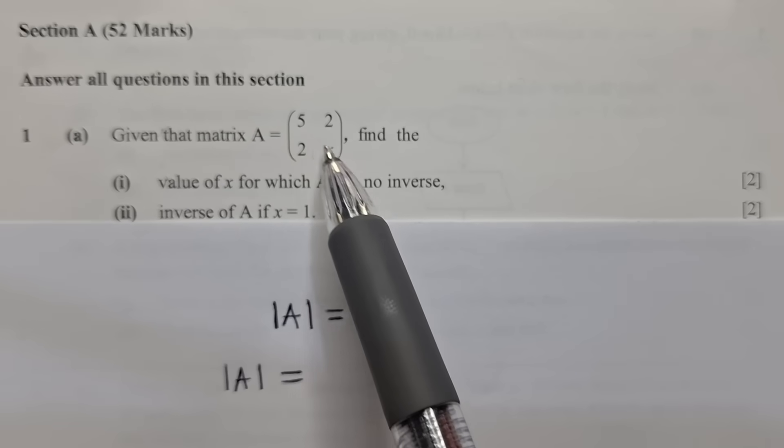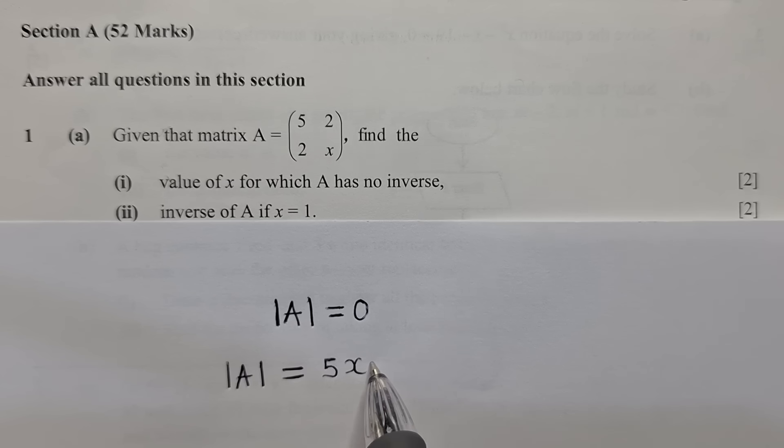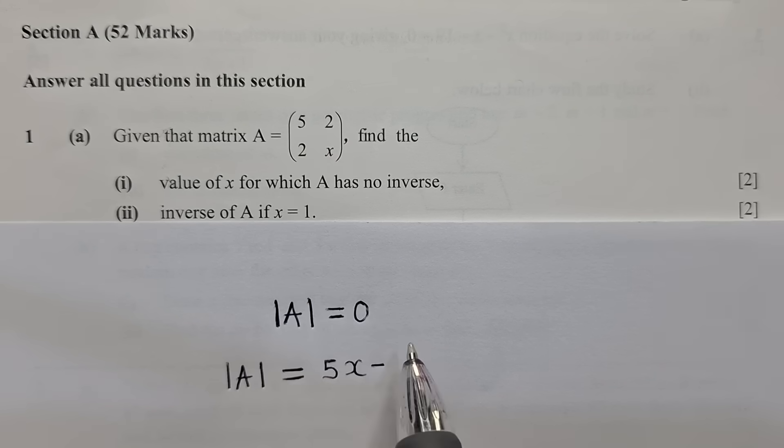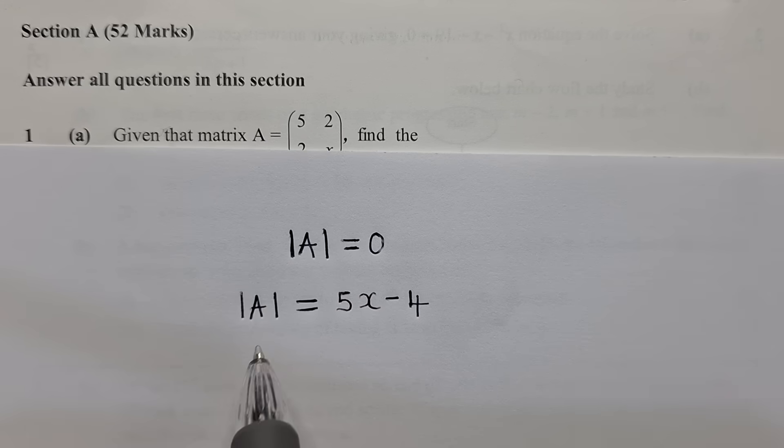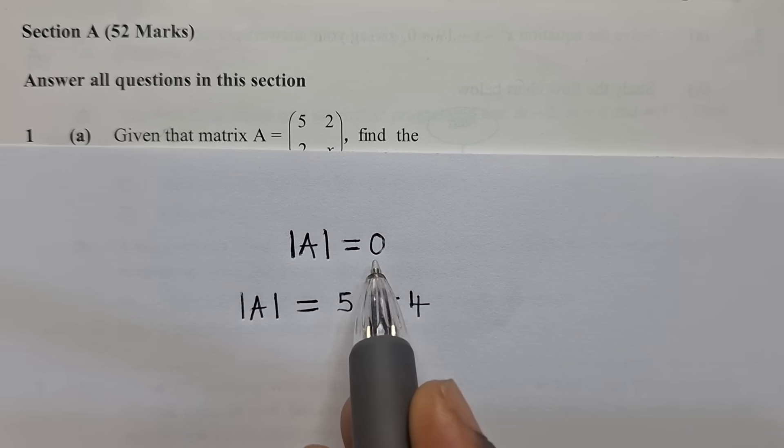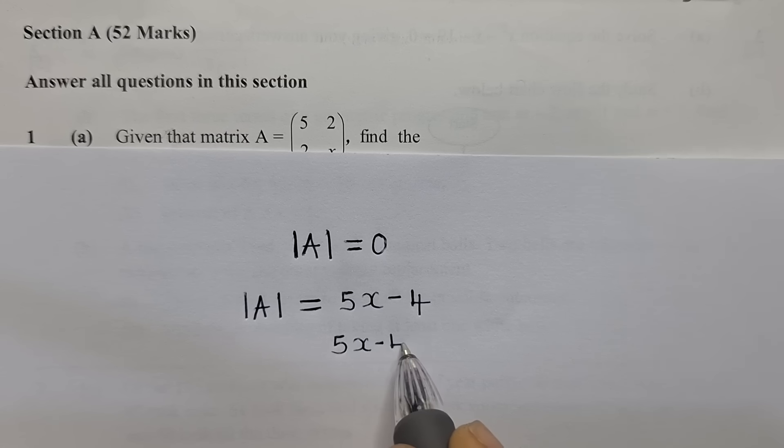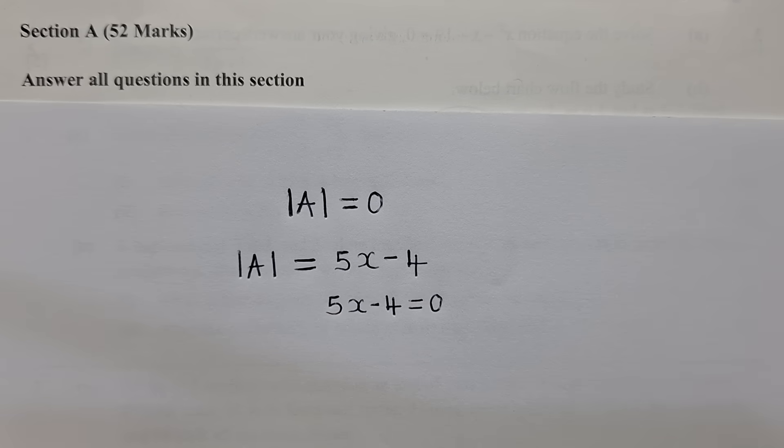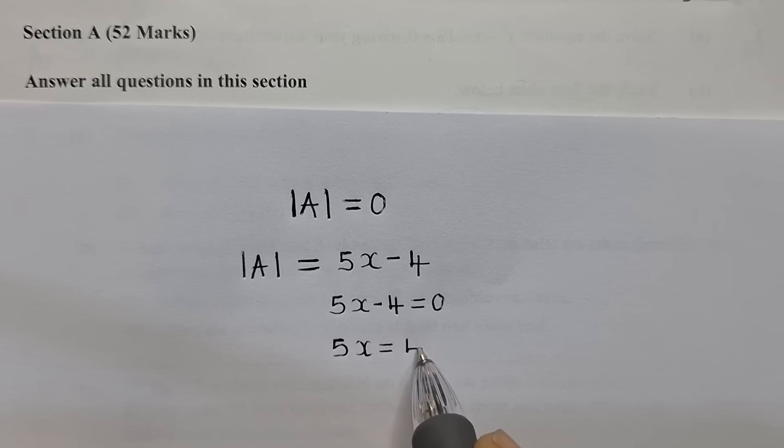So when we say major diagonal, this is major diagonal. You just say 5 times x, it will give us 5x, and then you say minus the minor diagonal, which is 2 times 2, and it will give us 4. So we've got now this, of which we know that this determinant is equal to 0. So we can write this as 5x minus 4 is equal to 0.